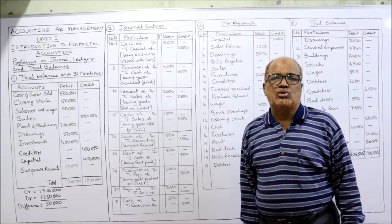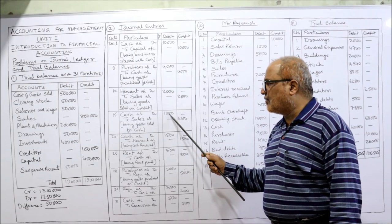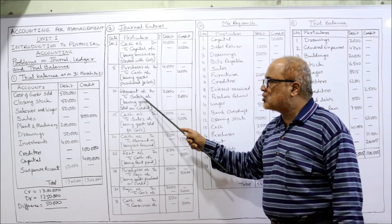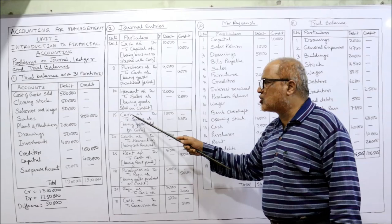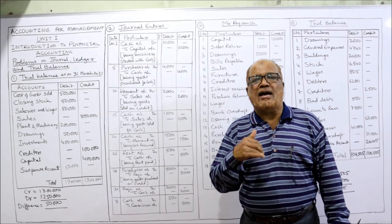Fifteenth: sold goods for cash. Cash comes in, so cash should be debited. Entry: Cash account Dr. to Sales account 1,000. Whether goods are sold on cash or credit, sales account should always be credited. If cash is coming in, cash is debited; if goods are sold on credit, the person is debited.